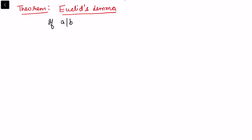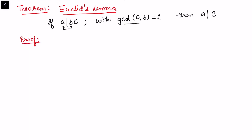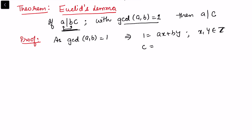Now I prove Euclid's Lemma, a very interesting and important divisibility property used many times in number theory. It states: if a divides bc and gcd(a,b) = 1, then a must divide c. For the proof, we start from the given condition gcd(a,b) = 1, which implies 1 = ax + by for some integers x and y. Multiplying both sides by c gives c = acx + bcy.